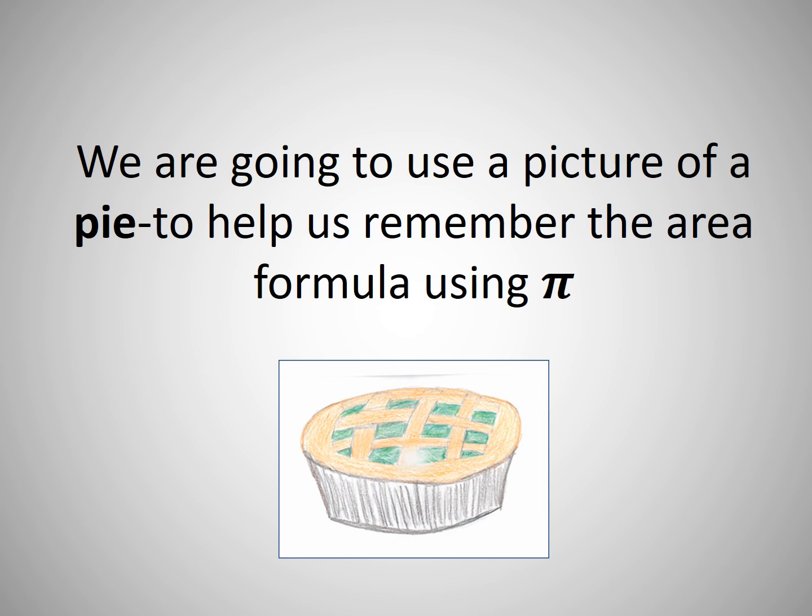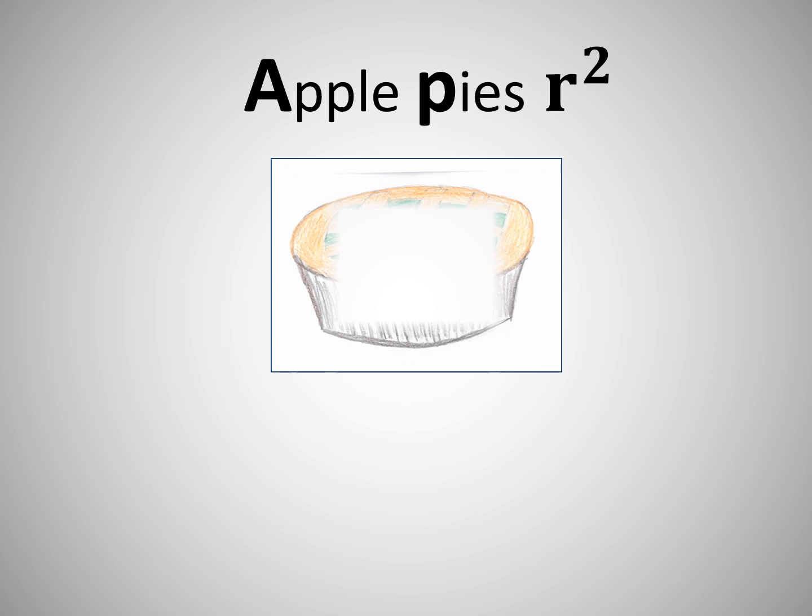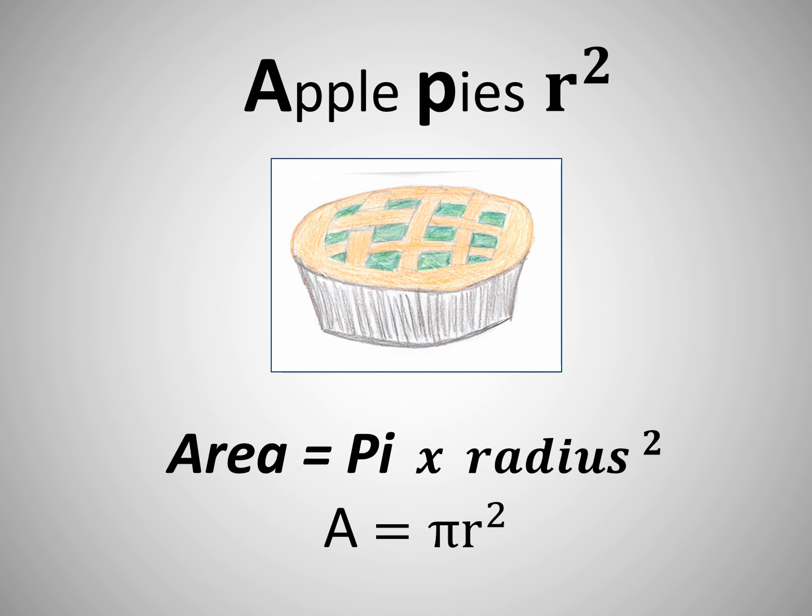We're going to use a picture of pie to help us remember the area formula using pi. Apple pies are two, which stands for area equals pi times radius squared.